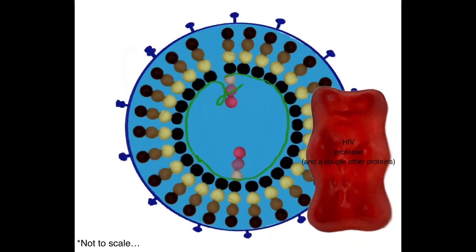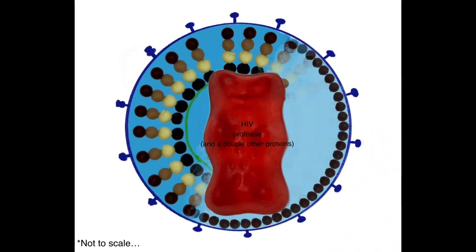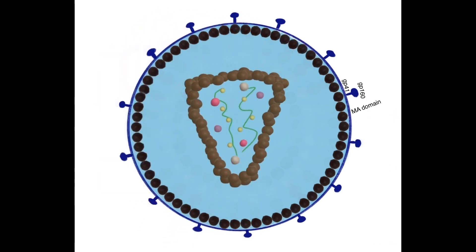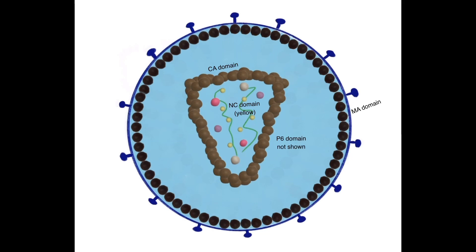During maturation, HIV protease cleaves GAG and POL. The matrix domain binds to the plasma membrane and GP41. The capsid domain forms a cone-shaped shell that protects the RNA and associated proteins and safely delivers them to the host nucleus during infection. The nucleocapsid domain captures the RNA genome. The P6 domain contains binding sites for proteins such as VPR and also helps with HIV's ESCRT-dependent budding along with VPU.